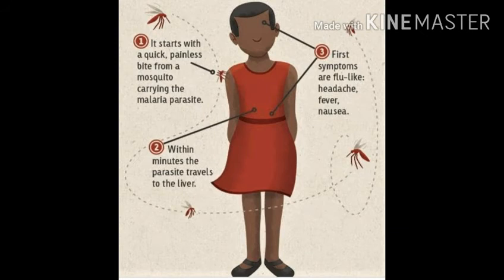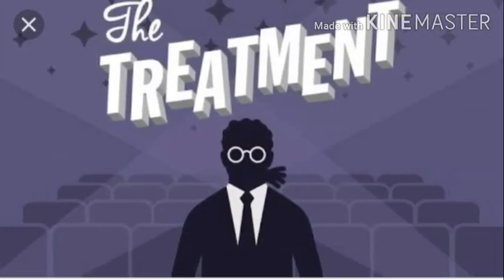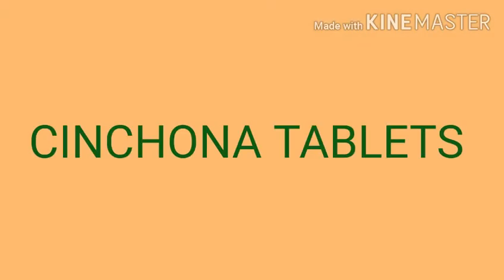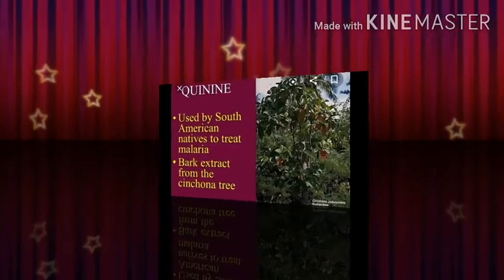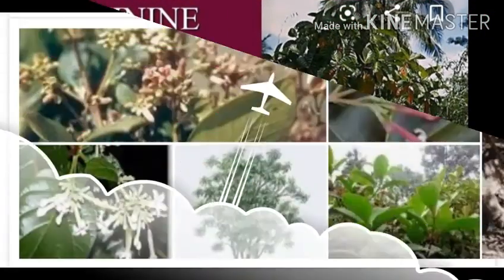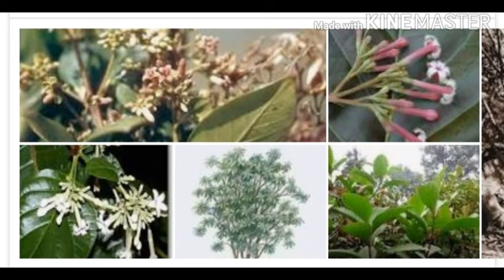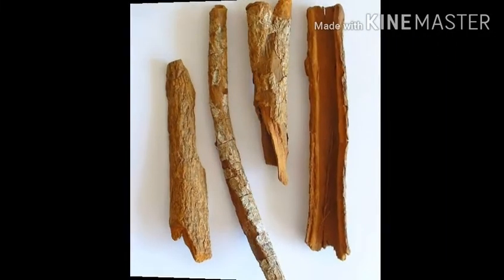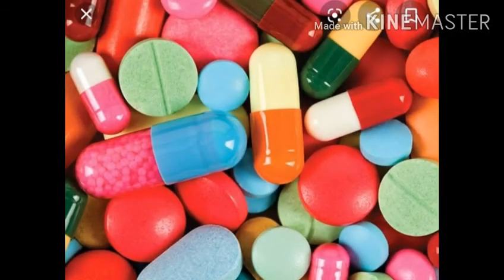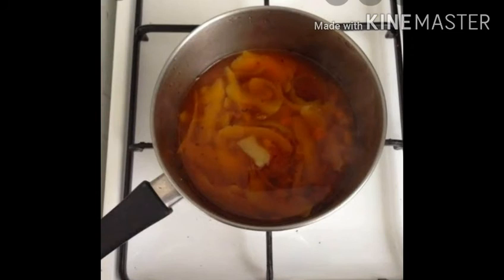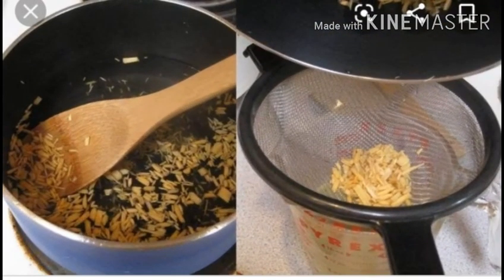So how can we treat malaria? Malaria can be treated with cinchona tablets. Cinchona tablets are made by using the bark of cinchona trees. Cinchona tree is native to South America. In the year 1859, cinchona tree was introduced in India, and now cinchona trees are found in Darjeeling and Tamil Nadu in India. The bark of this tree is used to make medicine for malaria. Earlier, people were boiling the bark of cinchona tree in water and then drinking that water for the treatment of malaria.